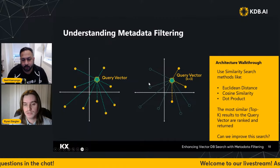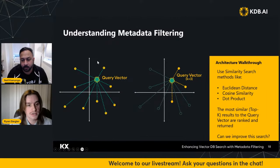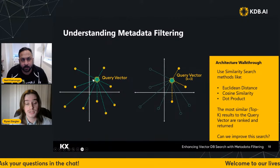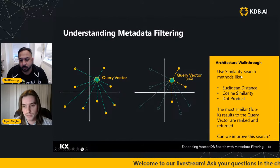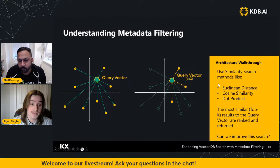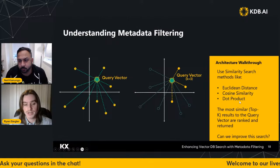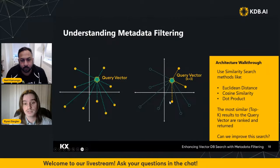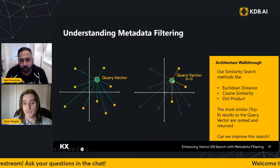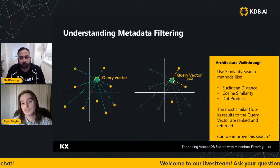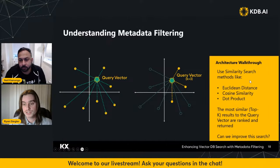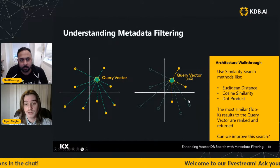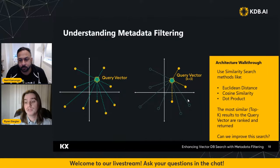If we take a closer look at what a search looks like, you can picture it in a 2D view where yellow dots represent vectors in our database, and a query vector is compared to all of them. That's using a method called vector search or similarity search, where you can use different methods including Euclidean distance, cosine similarity, and dot product — all supported in KDB.AI. This finds the most relevant vectors to a query vector, and then we return the top K results, for example the top three most relevant. This works very quickly and efficiently, but how can we improve it further?